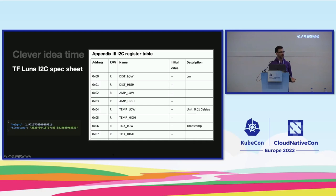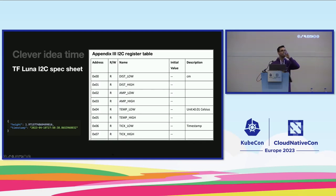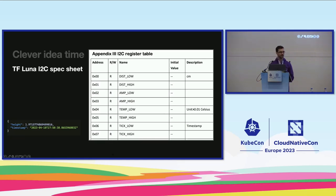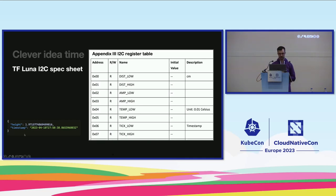I realized it's cyclical in nature — it might have to do with temperature. Maybe infrared is influenced by temperature. I went over the TF-Luna spec sheet again and noticed it reports the temperature of the chip itself at an amazing resolution of one-hundredth of a degree. So I added temperature to the stuff we track.